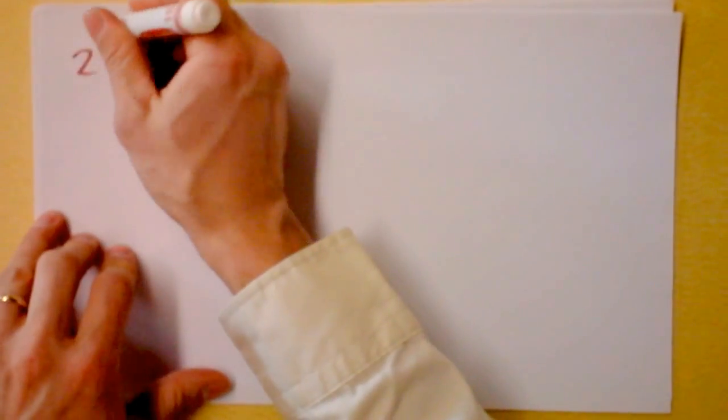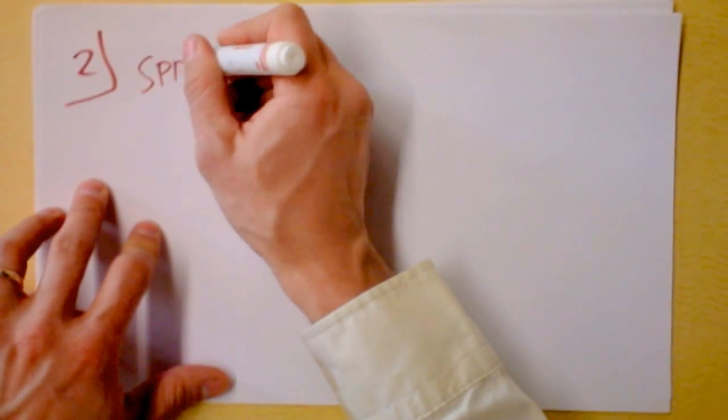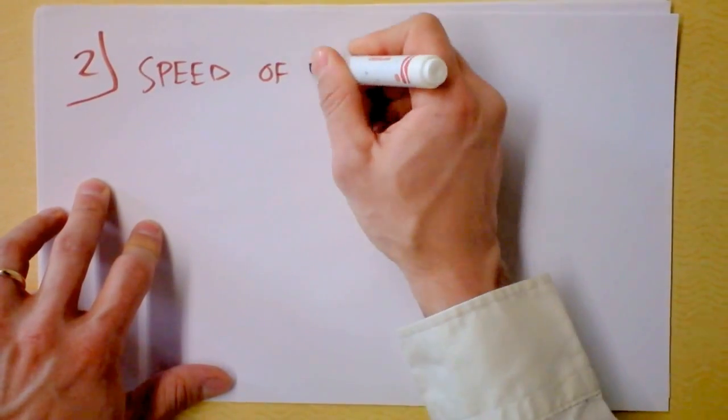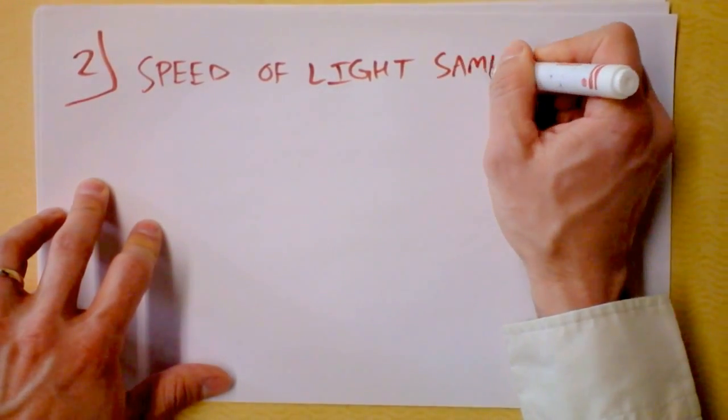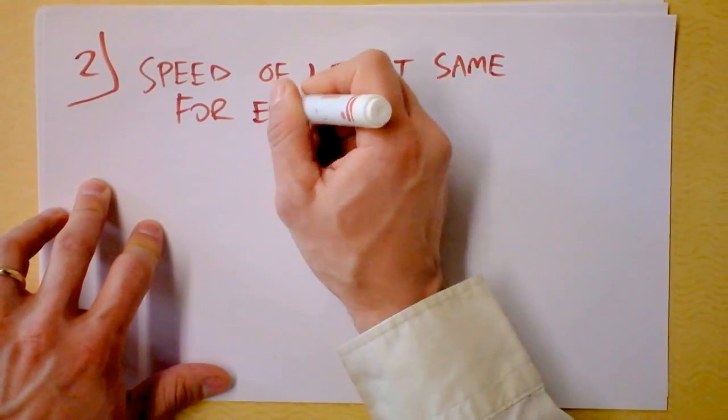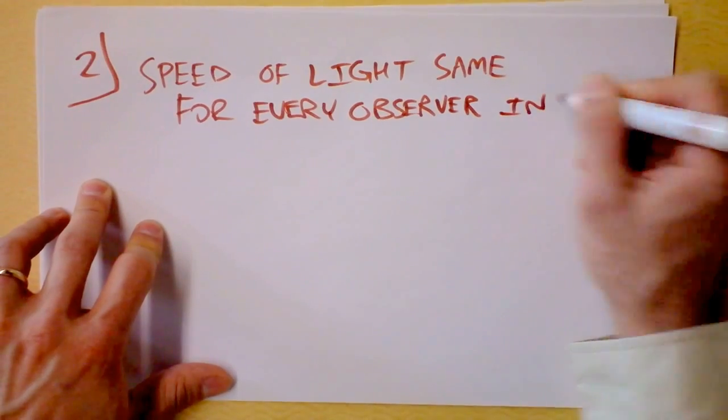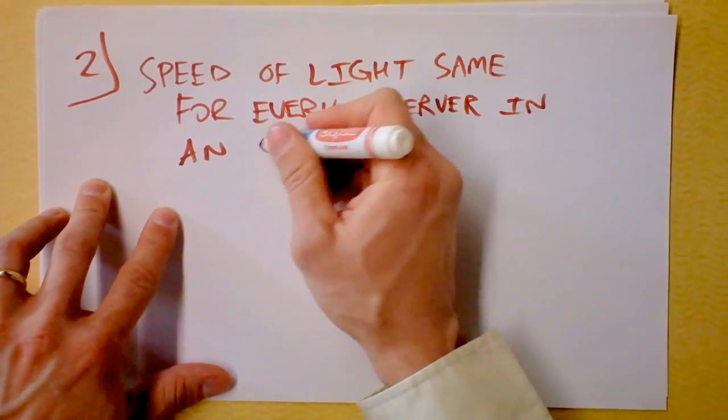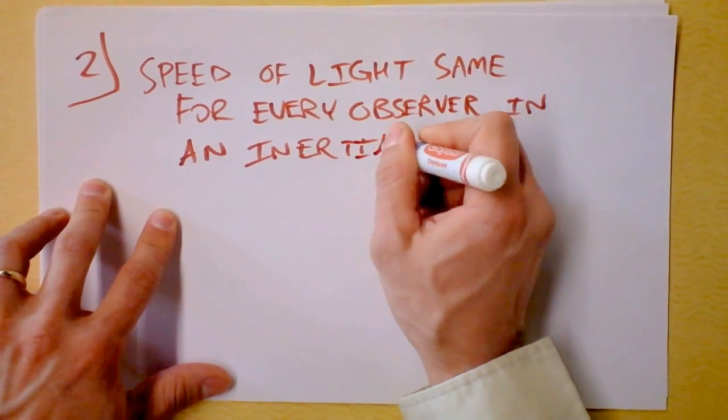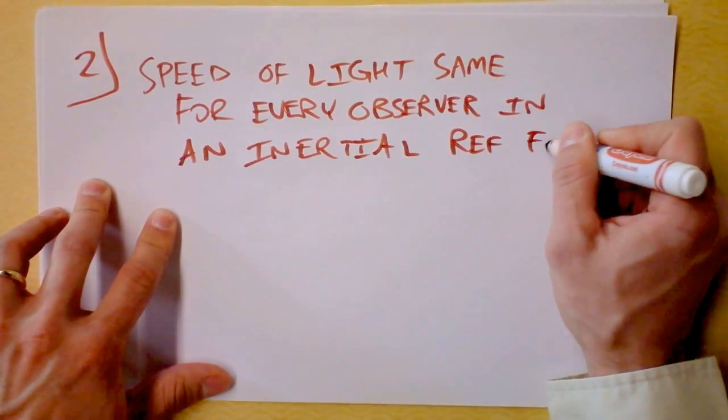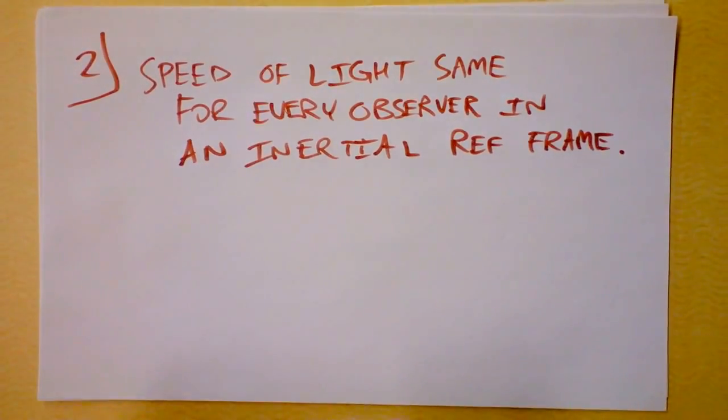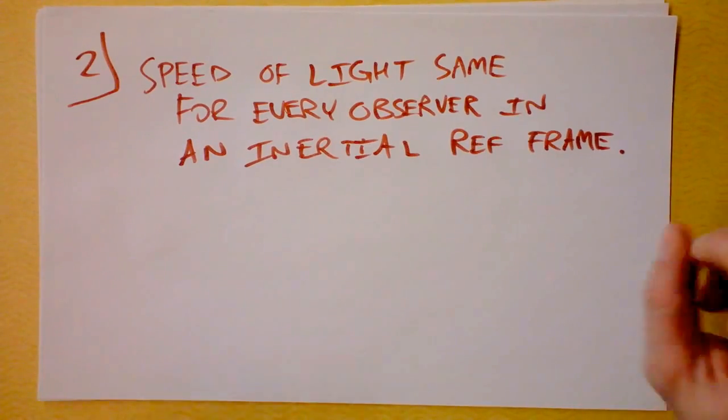I want you to consider Einstein's second big statement. Number two, Einstein says the speed of light is the same for every observer, assuming they're in inertial reference frames. This may not come as much of a surprise because you've been told things like speed of light is the speed limit of the universe. And when you were a little kid, you were like, I'm going to go as fast as the speed of light. Because that was cool, right?